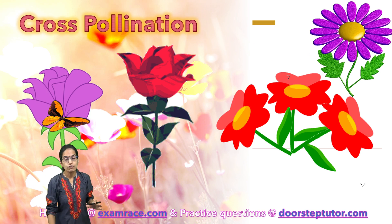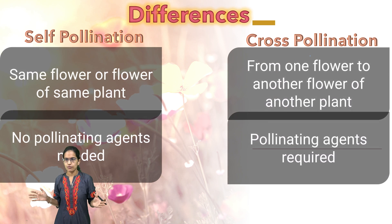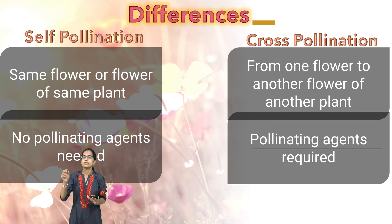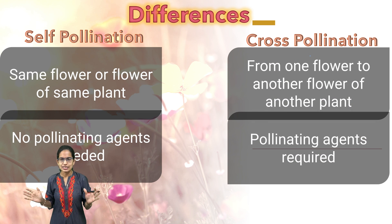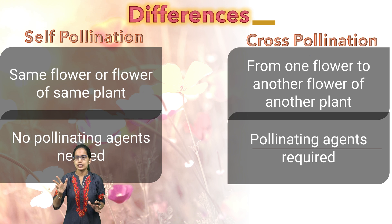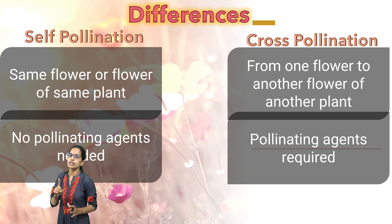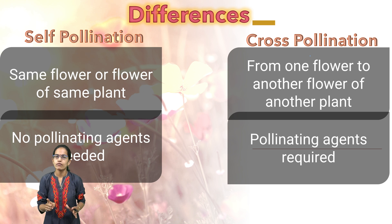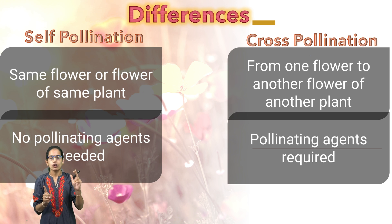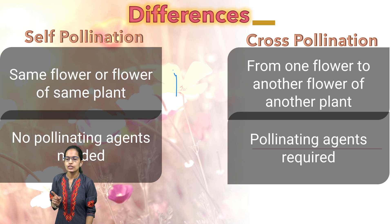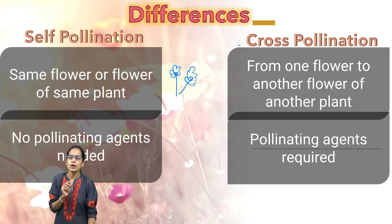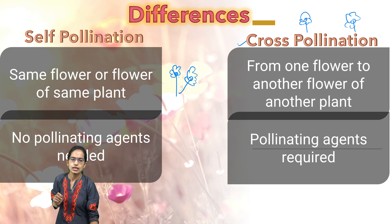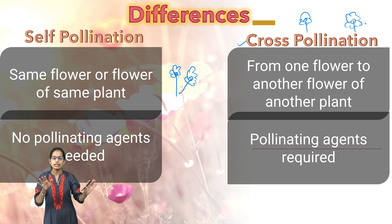This is the basic explanation of self-pollination and cross-pollination. Coming on to some of the major differences: the first is that self-pollination occurs either within the same flower or another flower of the same plant. However, in cross-pollination, pollination occurs between two very different species.